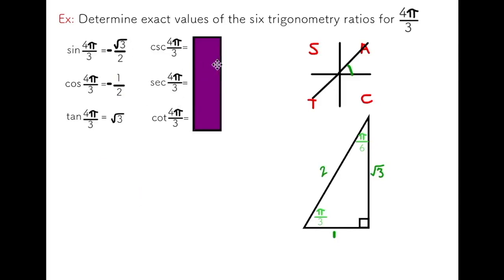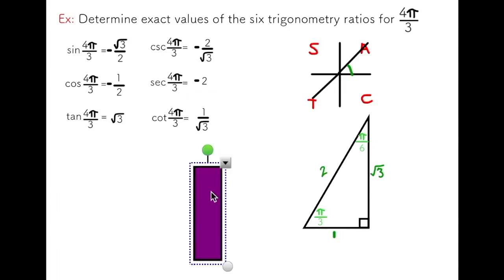Producing the reciprocal ratios is really simple. All I'm going to do is flip the opposite over the hypotenuse for the sine to get negative 2 over root 3. Secant, I'm flipping the adjacent over the hypotenuse to get negative 2 over 1, also known as negative 2. And for cotangent, flipping root 3 to get 1 over root 3. And you can see all of the signs remain constant.